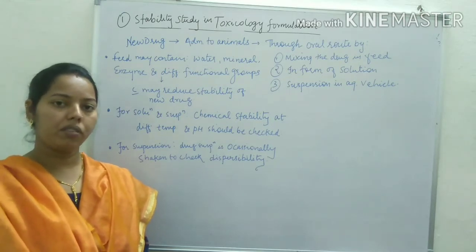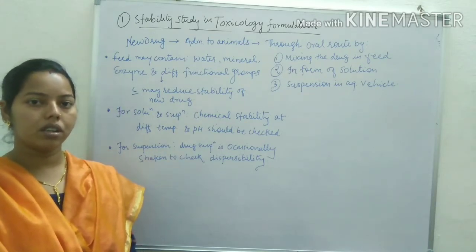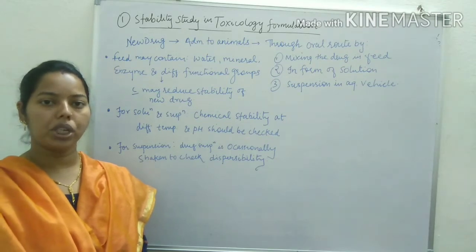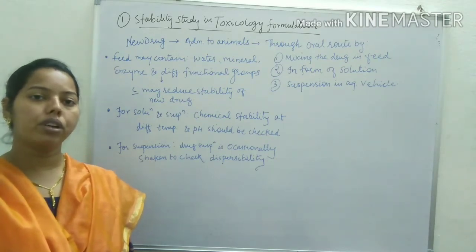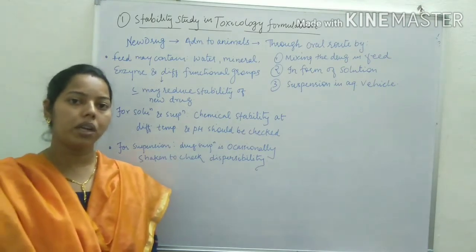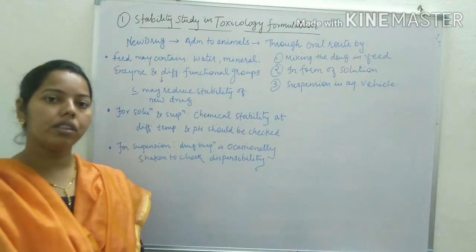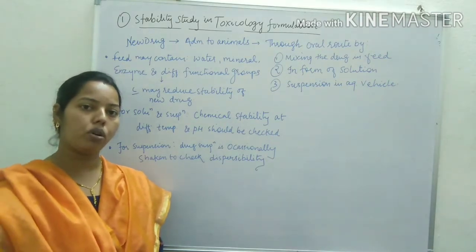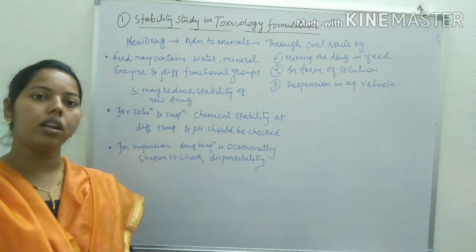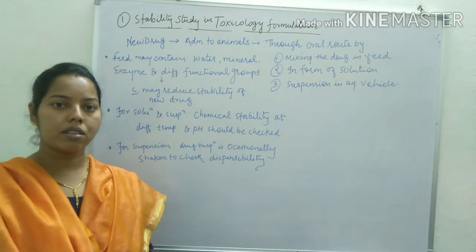In the previous video, we learnt about the stability studies or stability analysis in case of pre-formulation studies. We discussed about the five types of stability: chemical stability, physical, therapeutic, toxicological, and microbial stability.